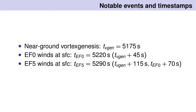Some notable times and events during the simulation: at time equals 5175, that is the time of vortex genesis — near-ground vortex genesis of the early vortex that becomes the tornado. 45 seconds after the first vortex genesis, we see EF0 winds at the surface, and 70 seconds after that, we see EF5 winds at the surface. So things happen quickly, but not so quickly that we can't learn something.